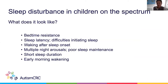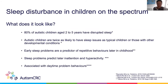So what does sleep disturbance in children on the spectrum look like? It can manifest as bedtime resistance, difficulties in initiating sleep — also known as sleep latency — waking up to sleep onset, poor sleep maintenance through multiple nighttime arousals, and all of these lead to shortened sleep duration. Probably the worst of all after a night's sleep like that is early morning wakenings. These types of sleep behaviours have been identified in 80% of children on the autism spectrum, and children on the spectrum are twice as likely to have sleep issues as typically developing children or those with other developmental conditions.